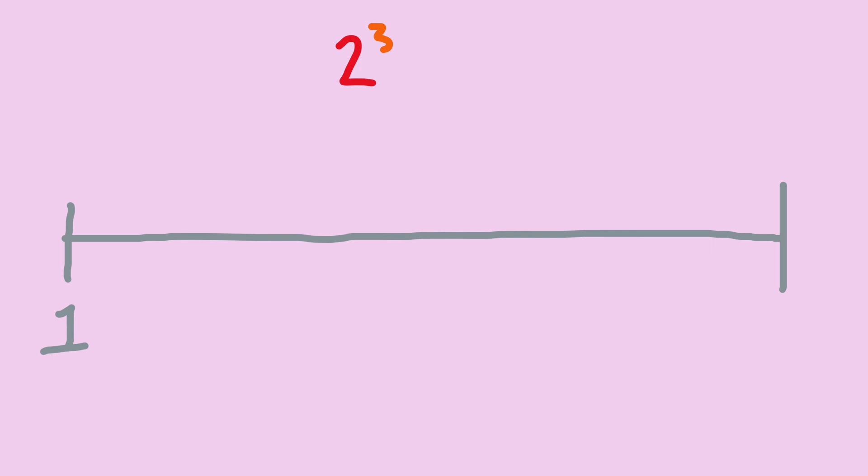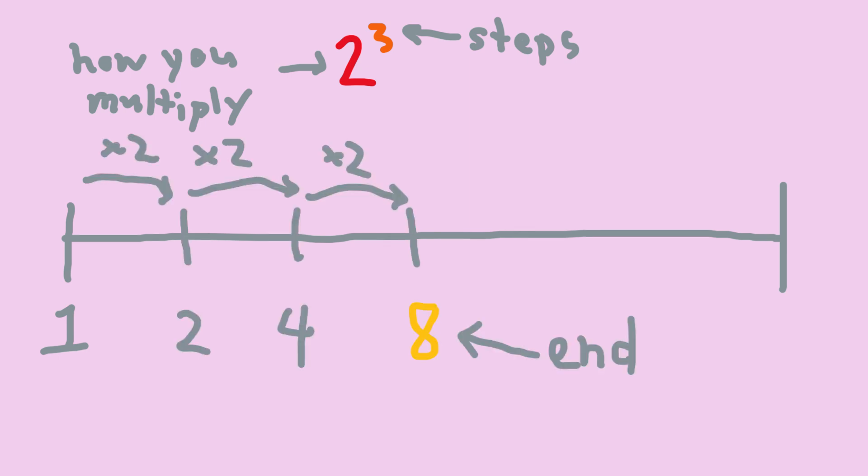Let's try to better understand how this counting system works. It turns out that exponentials belong here. The base tells you what you're multiplying by, and the exponent tells you how many steps you should take. Put together, it represents where you end.